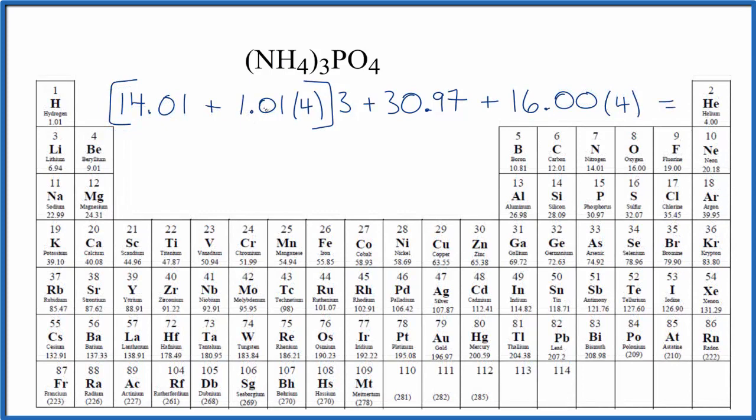So we'll multiply 1.01 times four and add that to 14.01, and then we'll take that number and multiply it by three. That gives us 54.15 grams per mole. We'll add the 30.97 to that, plus 16.00 times four, that is 64.00.